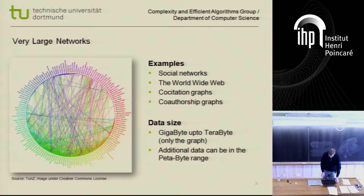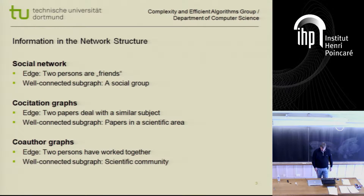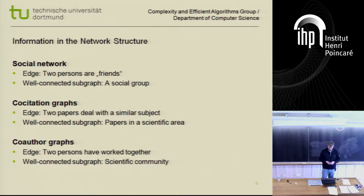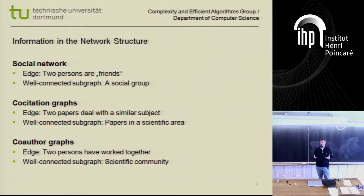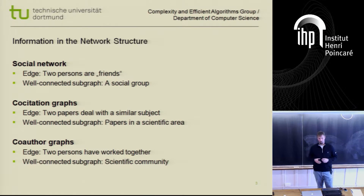If you have additional data like in social networks, then you have movies, images, and so on. This can easily be in the petabyte range. I'm interested in information which you can obtain from the link structure of these networks. In a social network, an edge corresponds to a friendship link between two persons, and if you think about what is a well-connected subgraph, this corresponds to a social group.